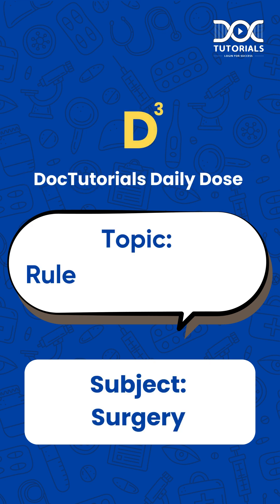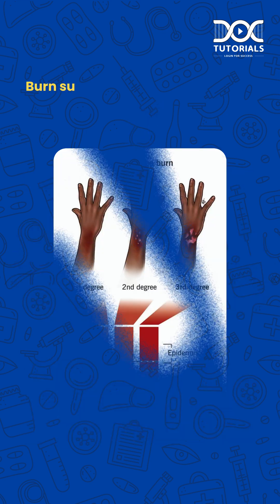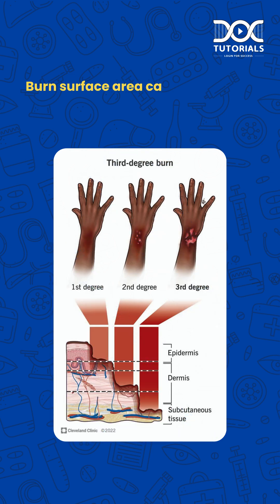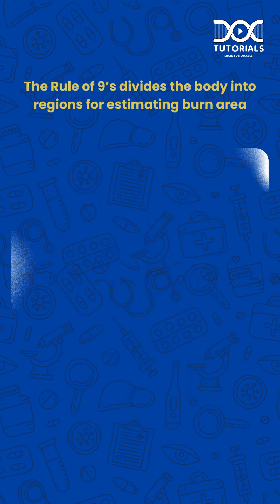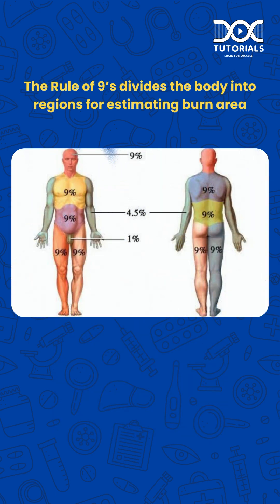Rule of 9's for burns — burn surface area calculation in 60 seconds. Here's the rule of 9's: it divides the body into regions for estimating burn area.